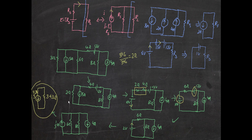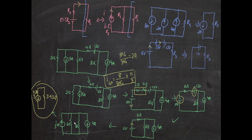If you were asked to find the current through the six-ohm resistor, you would first combine the two current sources to get eleven-thirds amperes total. Then apply the current divider rule: I₆Ω equals eight divided by (eight plus six) multiplied by the total current of eleven-thirds amperes. That gives you the current through the six-ohm resistor.